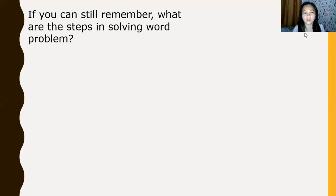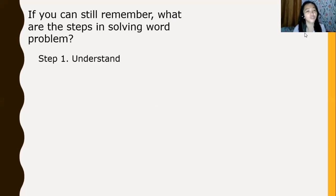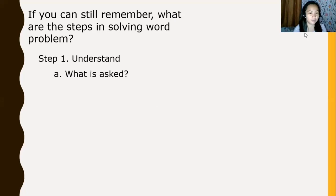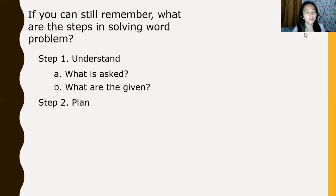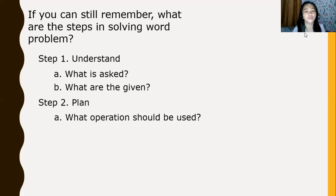If you can still remember, what are the steps in solving a word problem? Let us recall. Step one is: understand. Step two is: plan. When you know the question and you know the given, you plan a solution — look for the operation to be used. How do you know the operation? Go back to our word clues. When you see those word clues, that means addition.